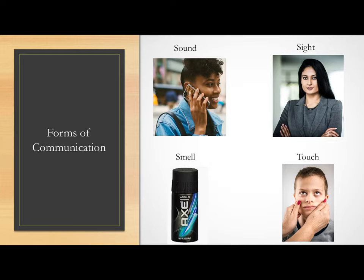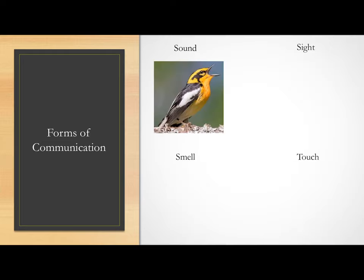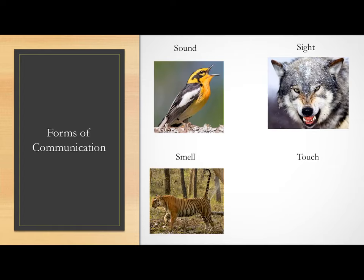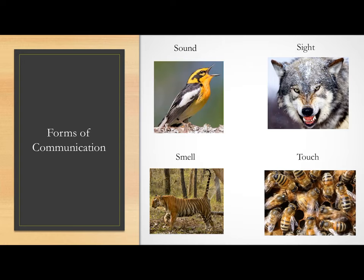This sensory communication also occurs in animals. Animals don't have a verbal language like ours necessarily, but they communicate a lot using visual, scent-based, and touch-based cues, like this wolf that's snarling aggressively, the tiger that's peeing to mark its territory, and the honeybees that are using their dance language to communicate about foraging resources.